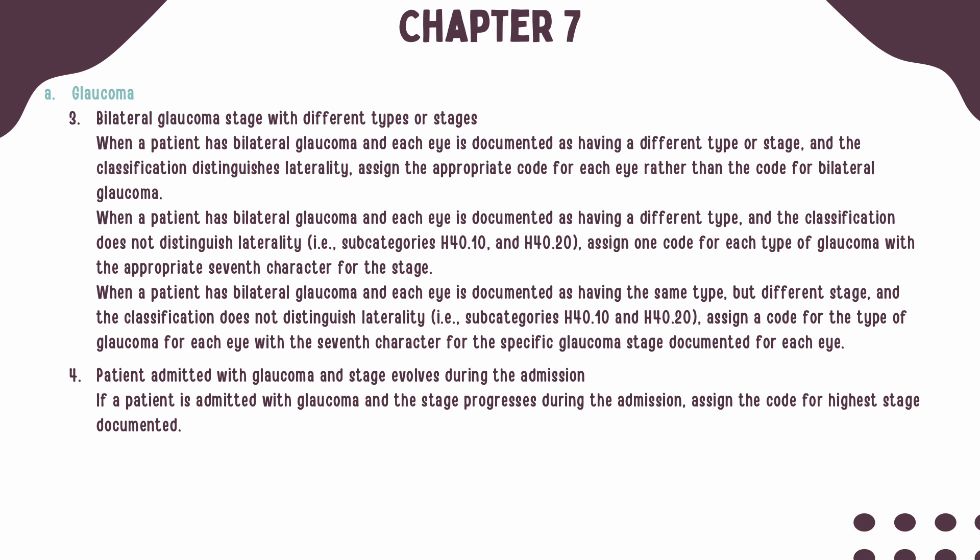When bilateral glaucoma is present and each eye has a different stage or type, you should assign the appropriate code for each eye individually. If codes are not available to distinguish laterality, then you should assign one code for each type of glaucoma with the appropriate seventh character for the stage.